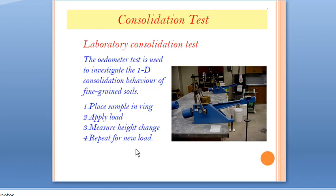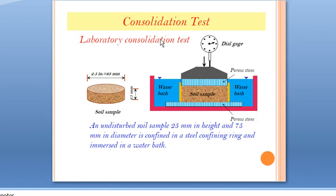An undisturbed soil sample of 25 mm in height and 75 mm in diameter is placed in a steel confining ring and immersed in a water bath. Porous stones are placed at the top and bottom of the soil sample to permit the flow of water, since consolidation involves expulsion of water. The dial gauge is fixed on top of the ring to measure height change.